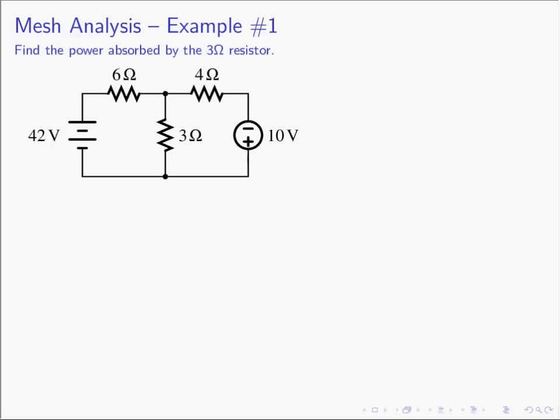Let's dive in and do an example. The first example is a simple circuit, and we'll use mesh analysis to find the power absorbed in the 3-ohm resistor. Step one: determine how many mesh there are — loops that don't contain any smaller loops. If it looks like a window pane, each pane is a mesh. In this case we have M equals 2, so I expect two equations and two unknowns.